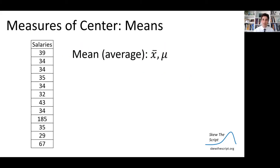First, we're going to talk about measures of center. Specifically, we're going to be talking about this data set. This is a data set of 12 salaries at a company that has 12 employees. The salaries are in thousands of dollars. For example, the first employee listed has a salary of $39,000, the second one listed has a salary of $34,000, et cetera.